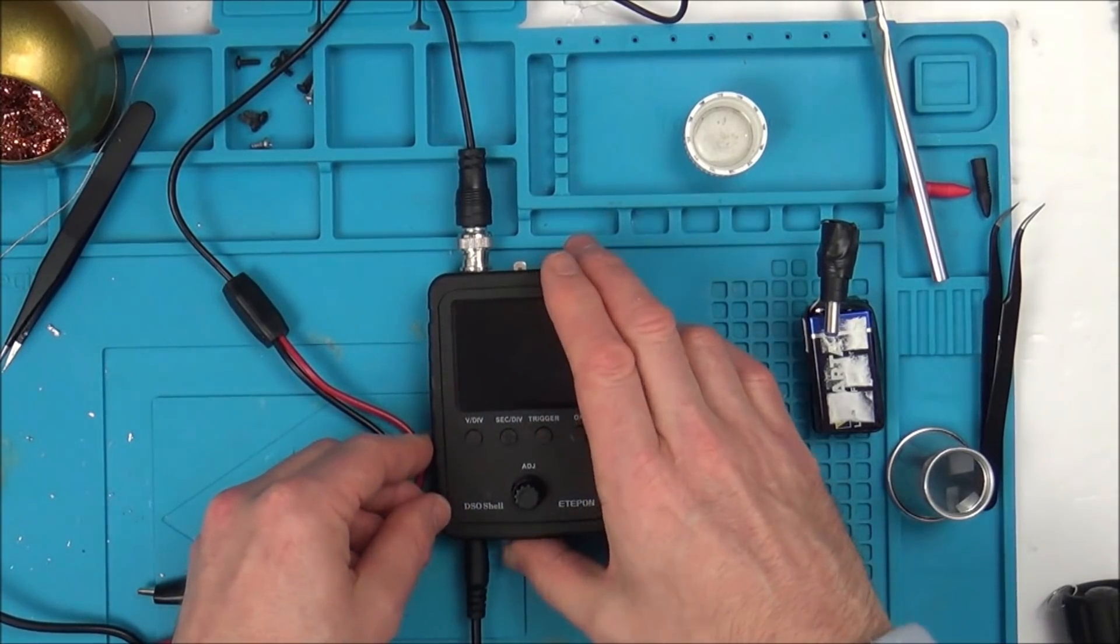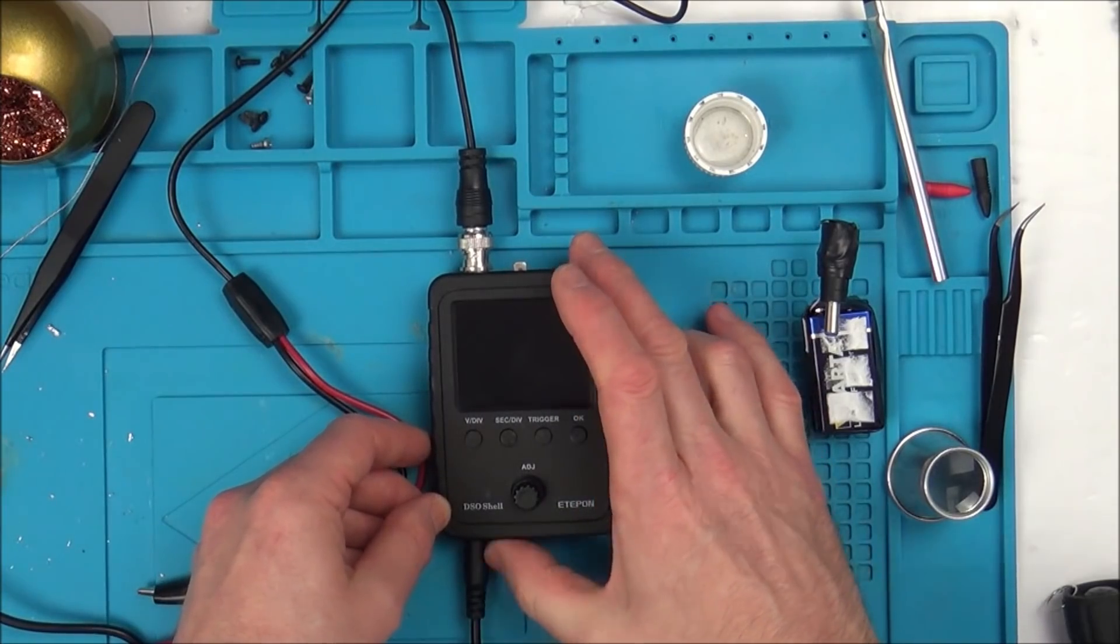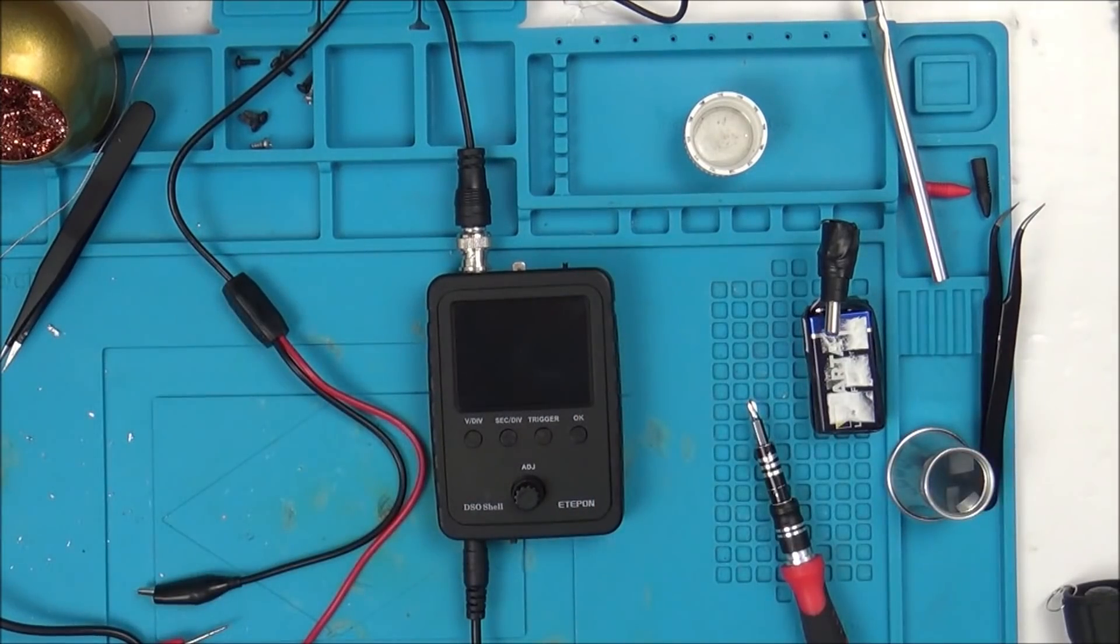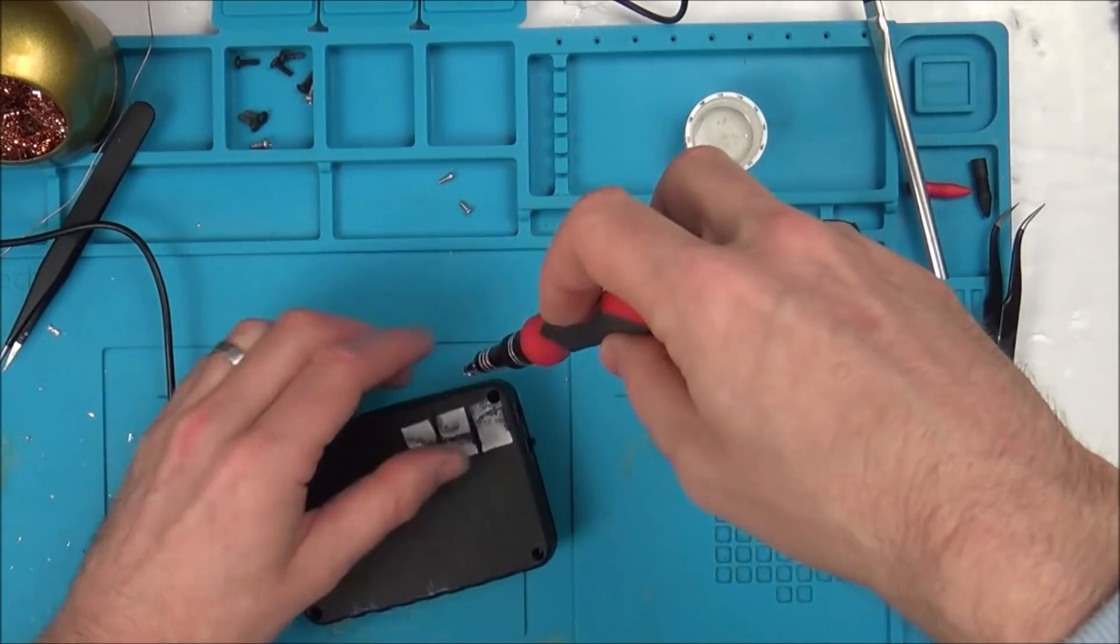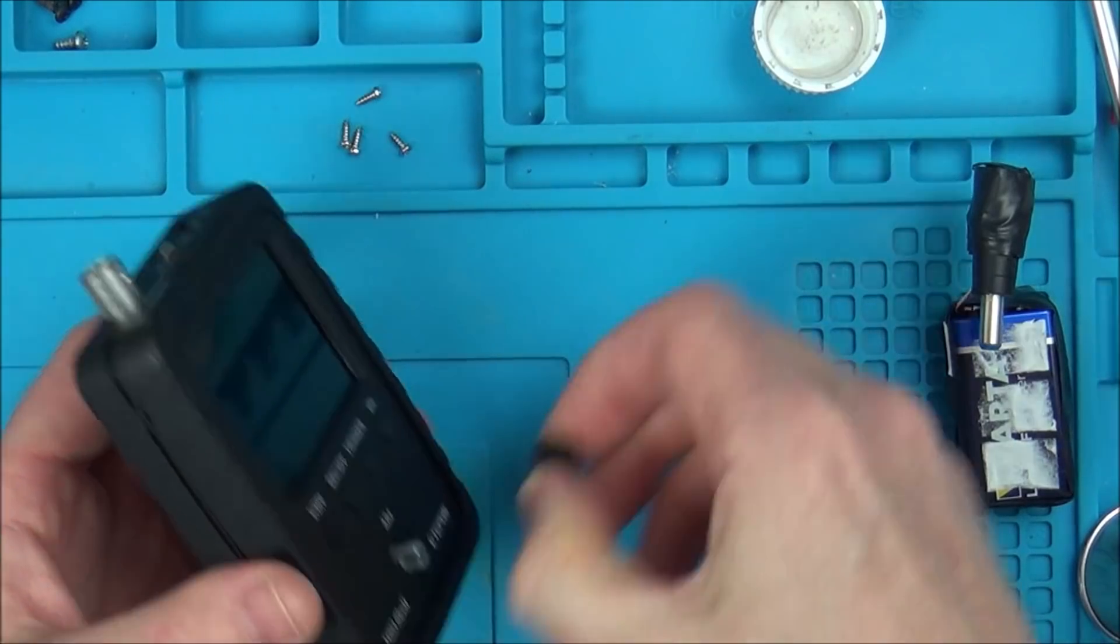Switch feels nice, doesn't feel anything wrong with it. So I need to take it apart and look on the inside. I presume this thing comes off here.